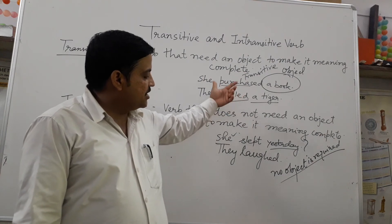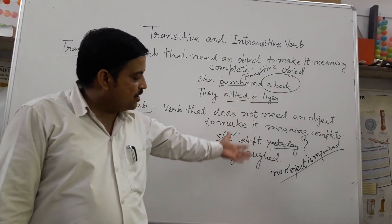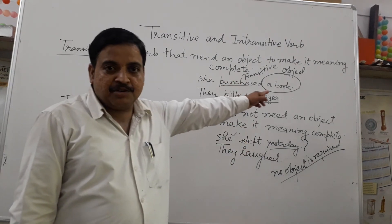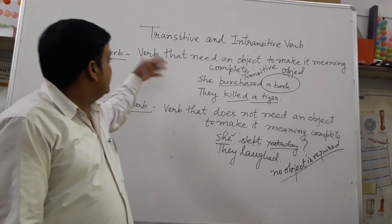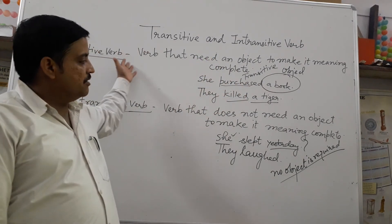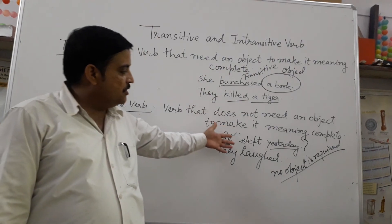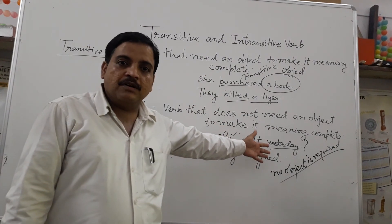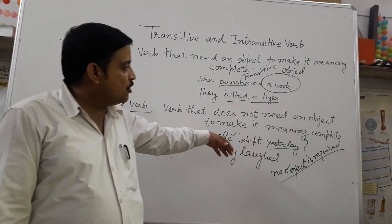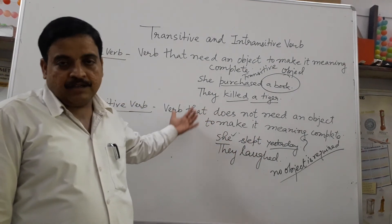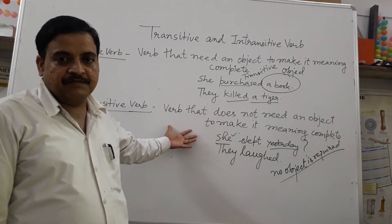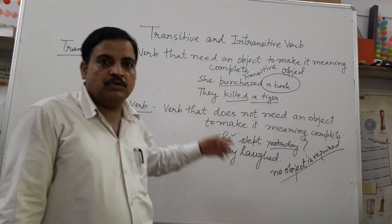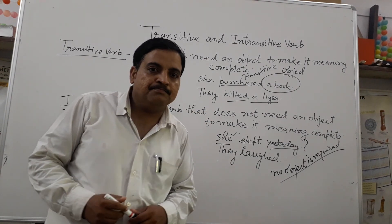What purchased? What failed? What slept? What left? So, if an object is answered, such verbs are called Transitive Words. A verb in which no object comes is called an Intransitive Word. I hope you have understood this. Thank you.